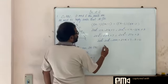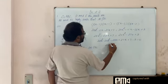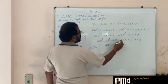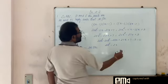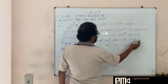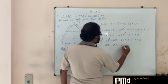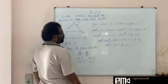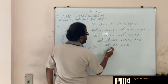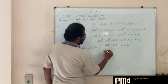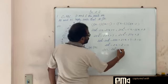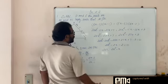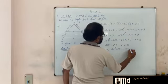24x squared minus 20x squared is 4x squared. Minus 29x plus 27x is minus 2x. Plus 7 minus 9 is minus 2, equal to 0. All of this, we should divide by 2. So we get 2x squared minus x minus 1 is equal to 0.